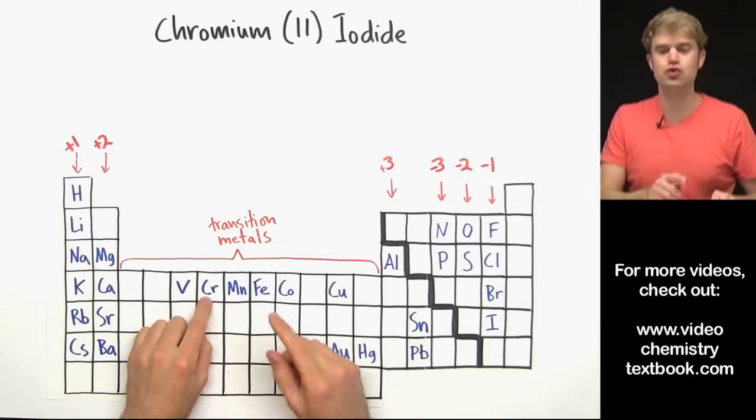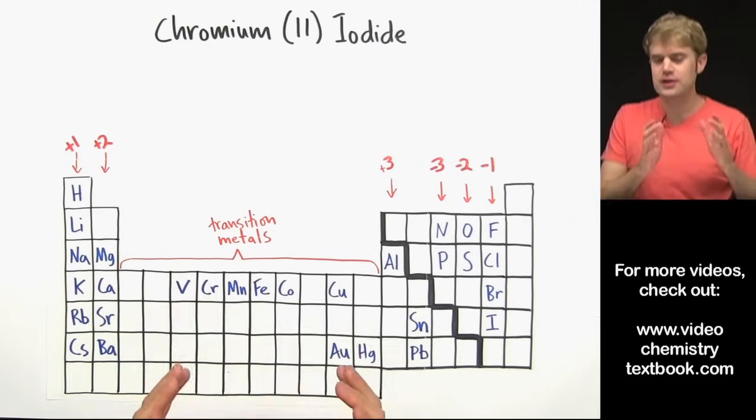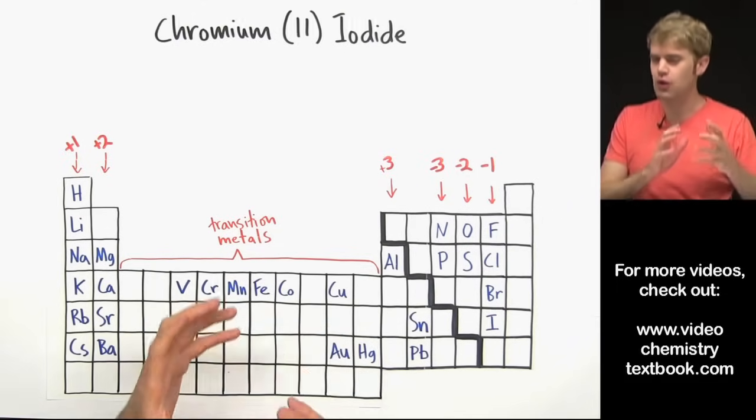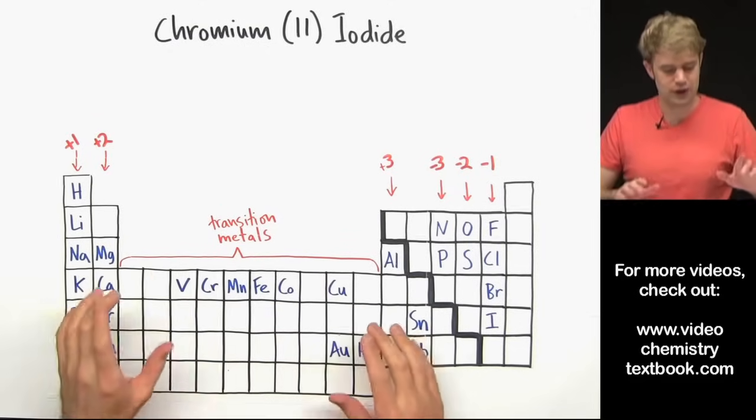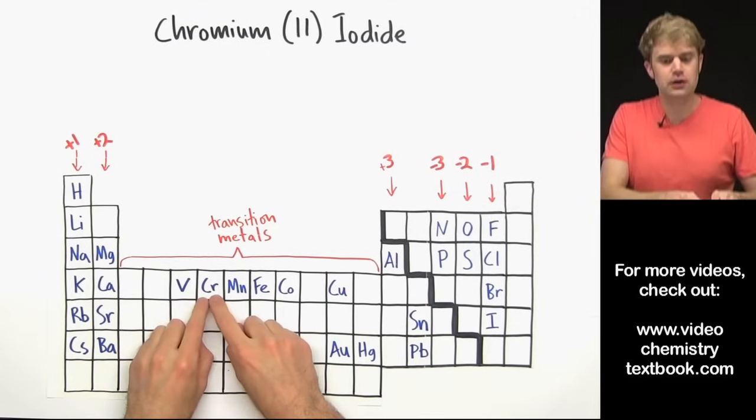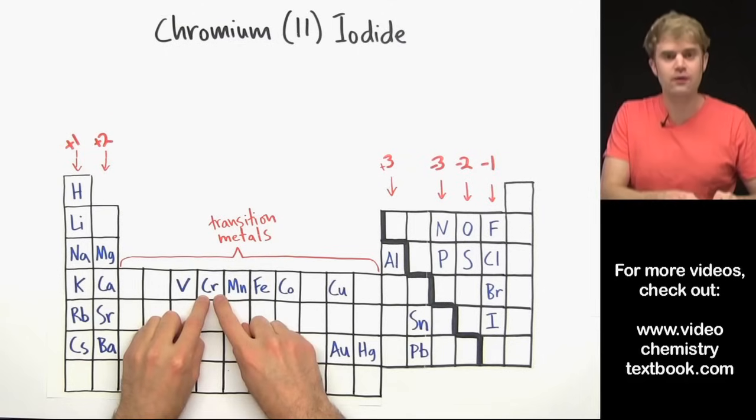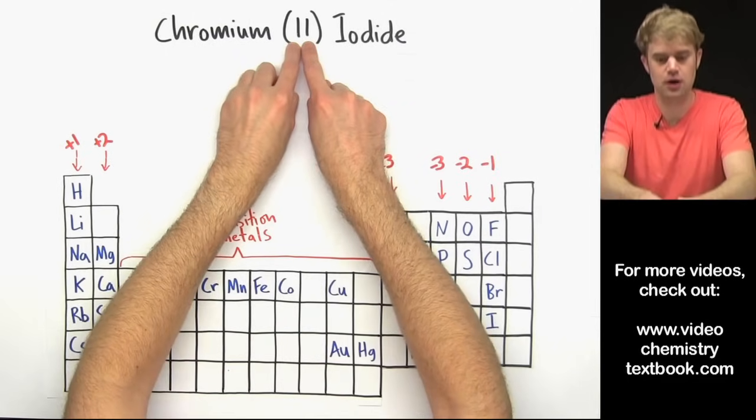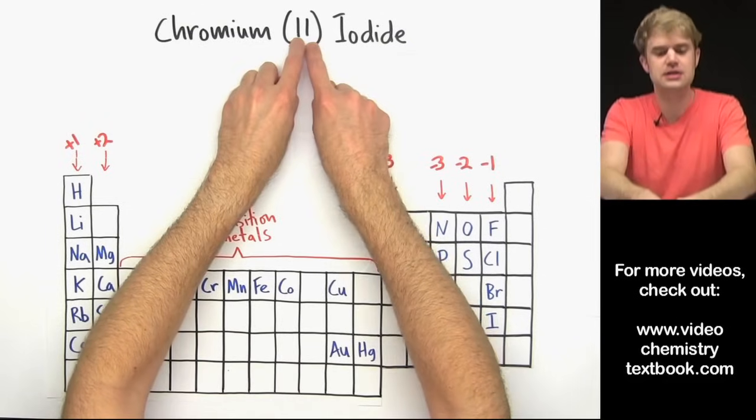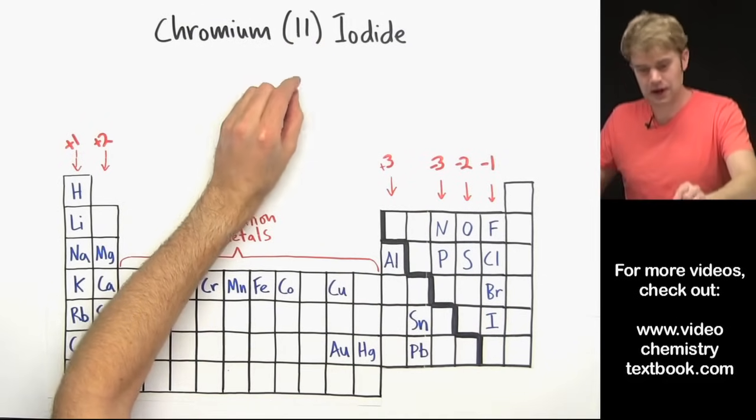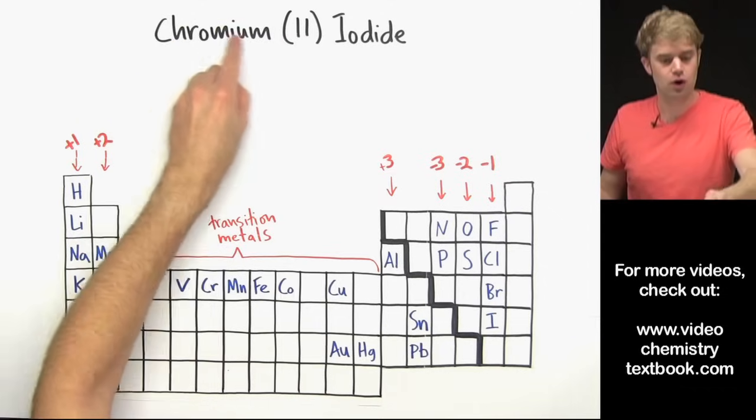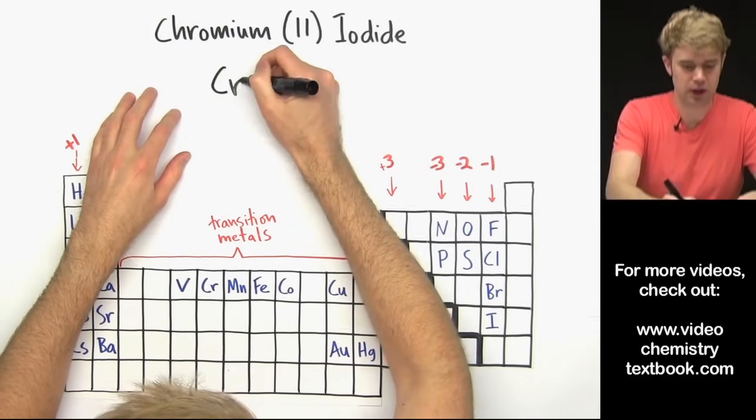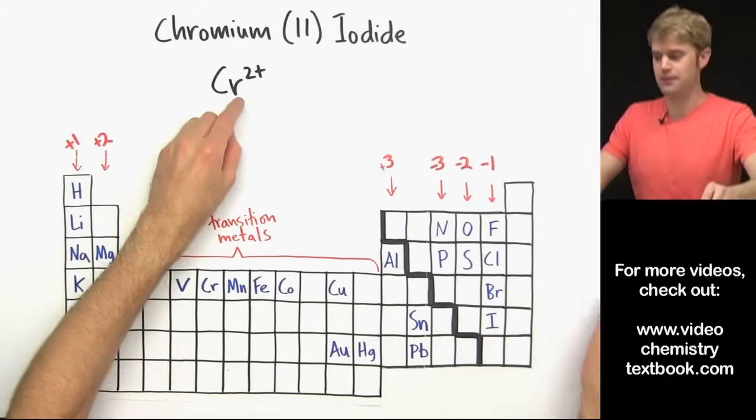Chromium, Cr here, is a transition metal. And transition metal ions can have a variety of charges. So you can't tell just by looking at the periodic table what the ionic charge is. So that's where this Roman numeral comes in. This Roman numeral here is the number 2 and it tells us that in this compound chromium has a charge of plus 2.